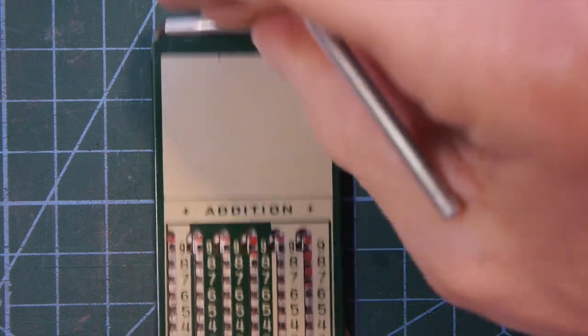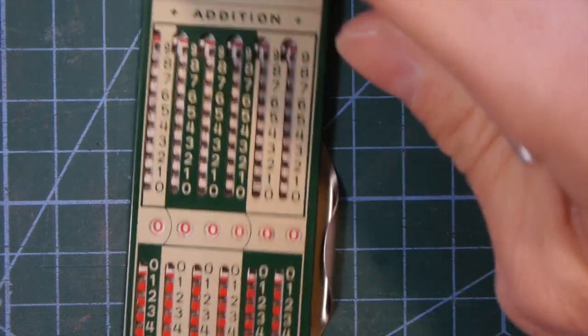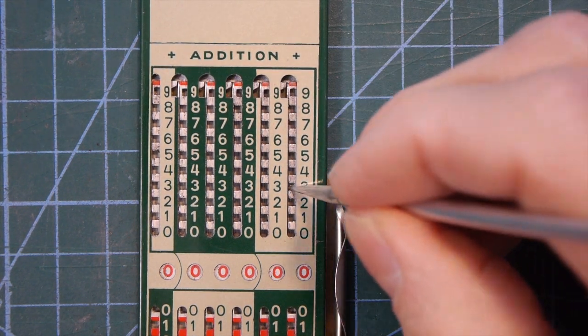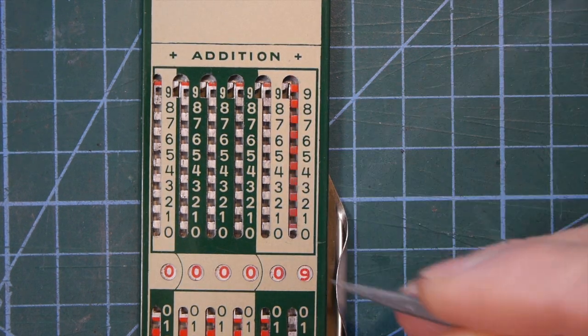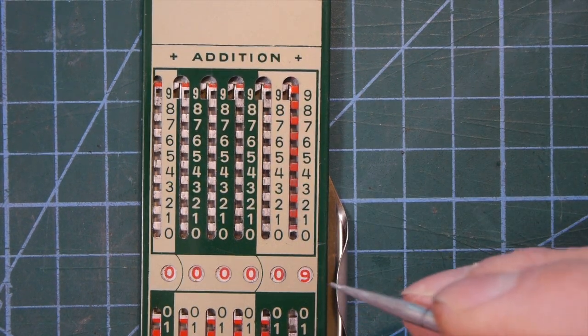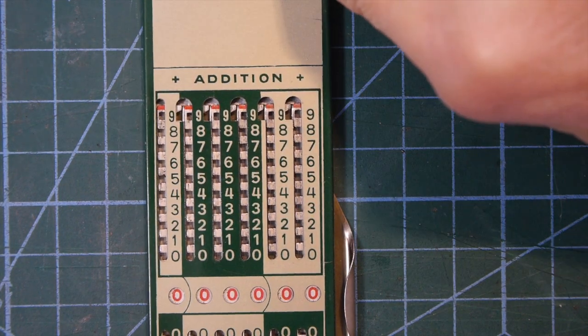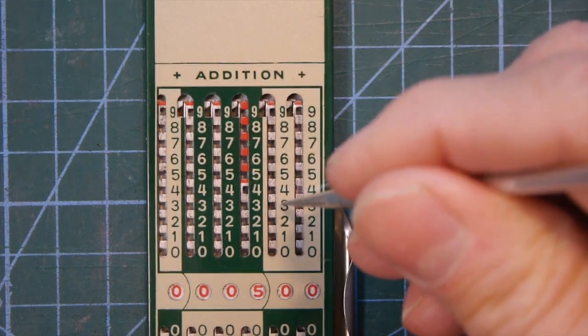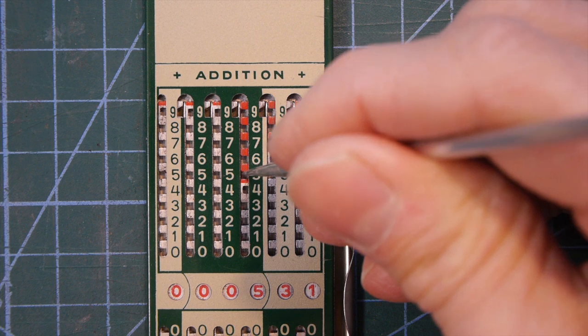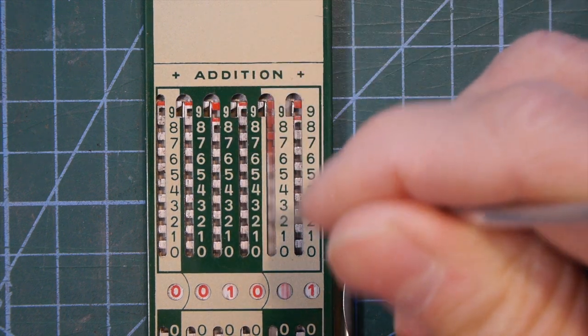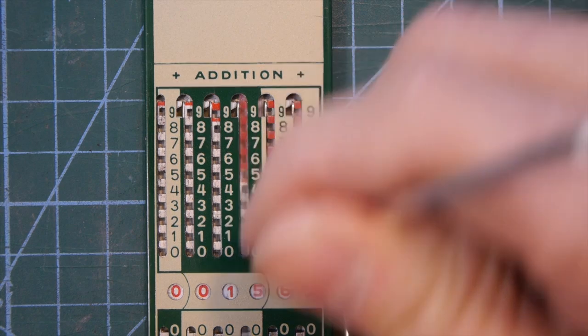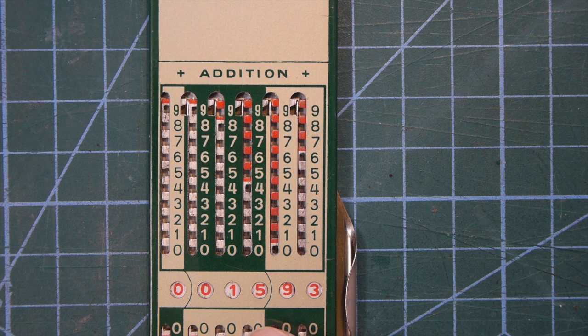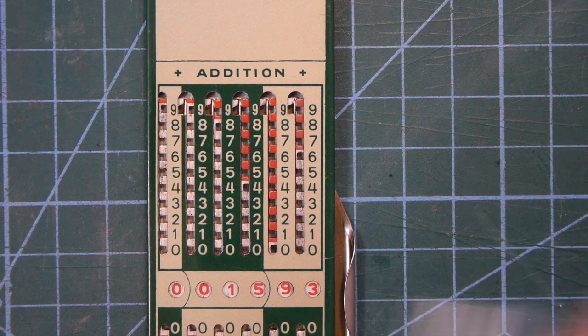Now as with all these devices you can do multiplication and I'm not going to go into detail, but to give you a very simple example it's done by multiple additions. So if I want to do three times three that's three, three, three, so three times three is nine. But if I want to do 531 times three, well there's the 531, 531, and 531, so you can see the answer is 1593. So what we've done is just added it three times on itself.